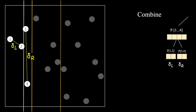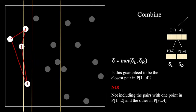To combine the results from the two halves, we choose a smaller value between delta L and delta R and call it delta, the shortest distance so far. But could we conclude that this is the shortest distance from point 1 to point 4? The answer is no, because we have not yet considered the pairs with one point from the left half and one point from the right half.